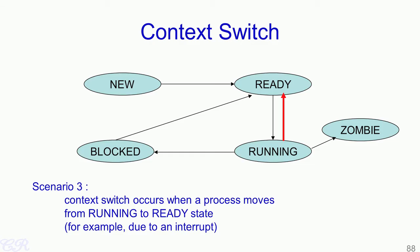In the third scenario, if a process is in the running state and a hardware interrupt occurs, it can lead to a context switch. The process moves from the running state into the ready state as a result of the interrupt. This causes an interrupt handler to execute, and at the end of the handler a new process may be executed in the CPU, moving from the ready state into the running state.